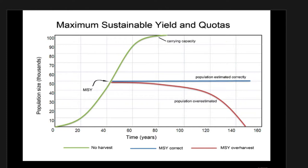Our conditions here assume stability. Our conditions assume that we have some given carrying capacity of the habitat. Let's say we can support as many as 100 tuna. This is all based on the notion that you and I should be taking these resources. What's the maximum we can take that would lead to the greatest amount of reproduction — the replacement of that population — and that economically that's the desirable condition.